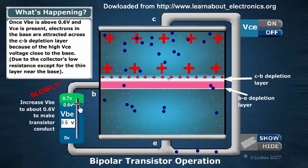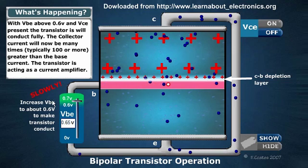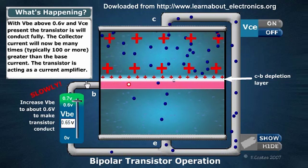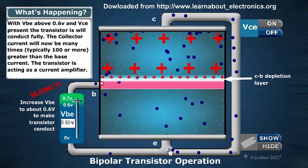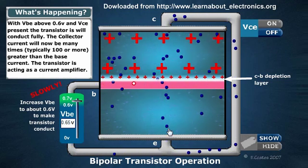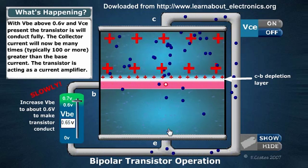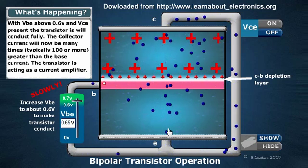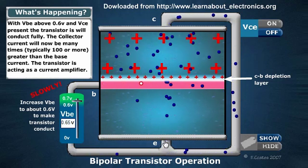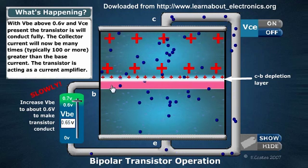Let's increase it up to about 0.65V. When the voltage across the base and emitter is above 0.6V and the collector-to-emitter voltage is present, the transistor will fully conduct — it has no resistance at all. The flow of current from the collector to emitter may be many times — like hundreds of times — bigger than the flow into the base. There is flow into the base, but it's tiny.